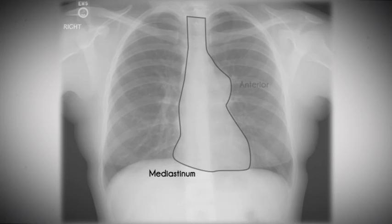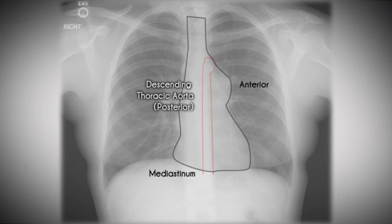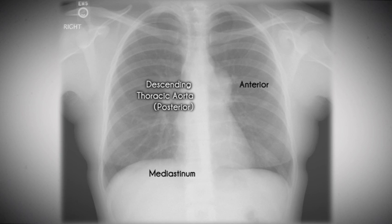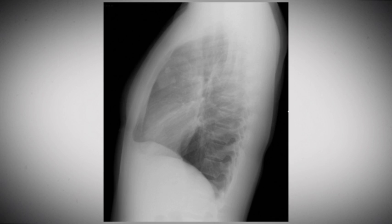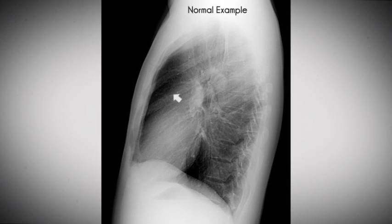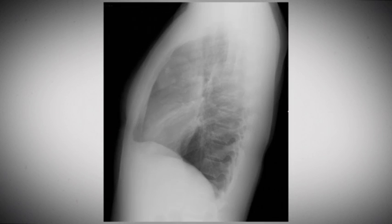The lesion is probably anterior because it is obliterating the main pulmonary artery, which is an anterior structure. At the same time, the normal descending thoracic aorta can be observed, which is posterior to the lesion. The mass produces a convexity and obliterates the normal contour of the pulmonary artery, and thus needs to be explained. From the lateral view, in place of the normal retrosternal clear space, there is a soft tissue mass with a couple of densities within. Normally, a lucency in the retrosternal space should be seen above the heart; instead, here is a soft tissue mass with some calcifications.